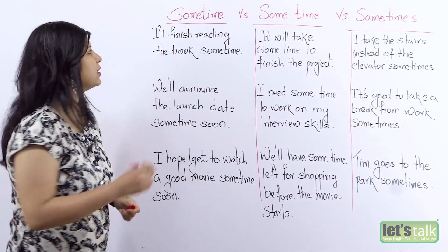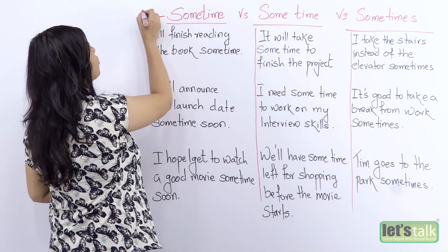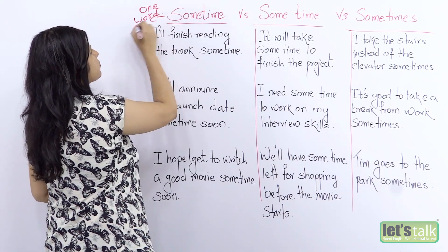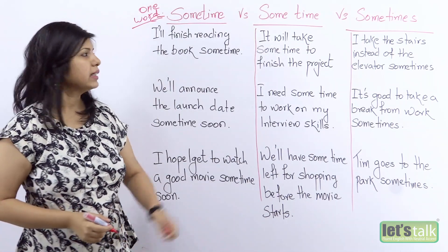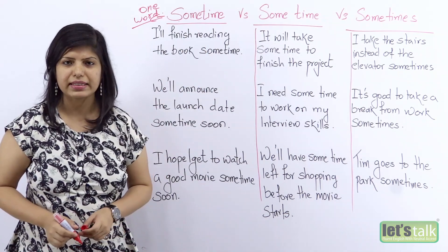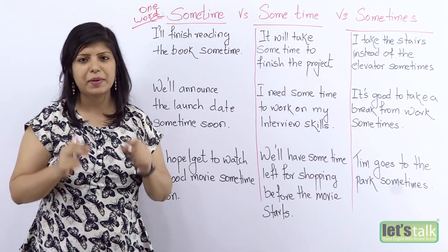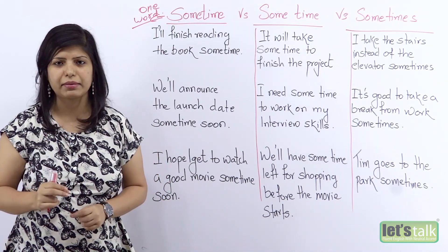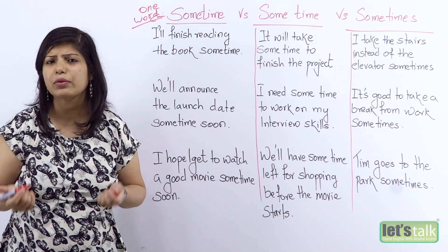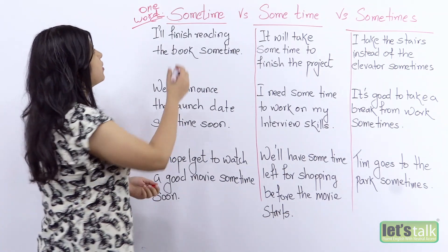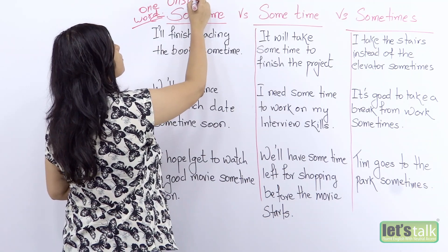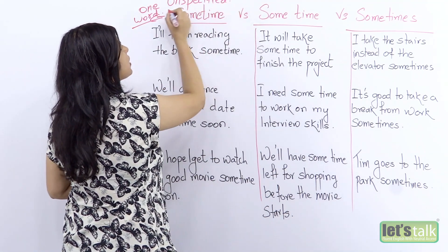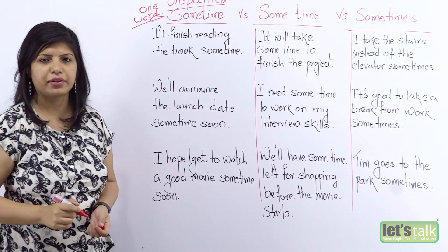Notice here, this is first of all one word. Sometime means an unspecified time — it's an unspecified point in time. We don't know exactly when. Let's write that down: it's unspecified.